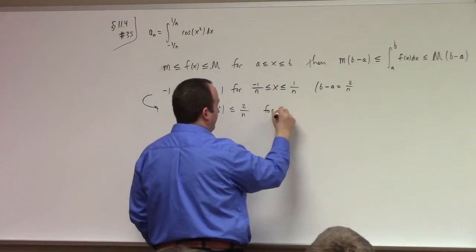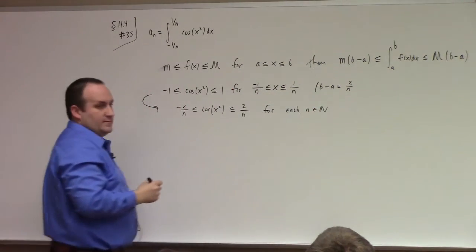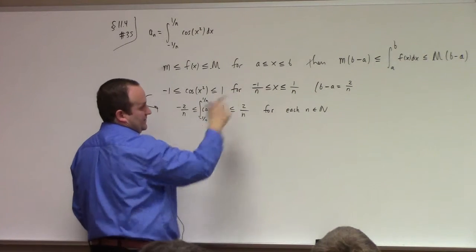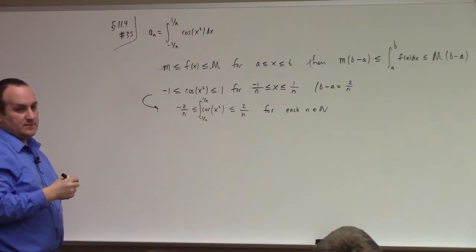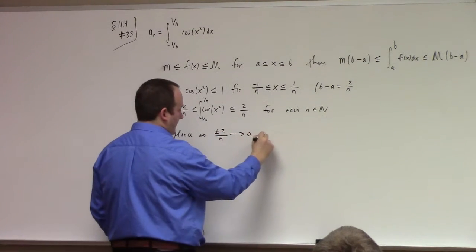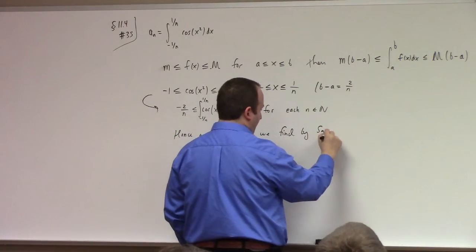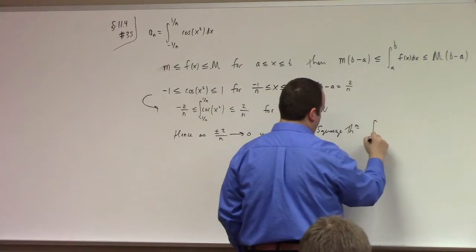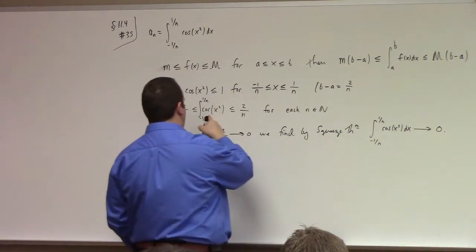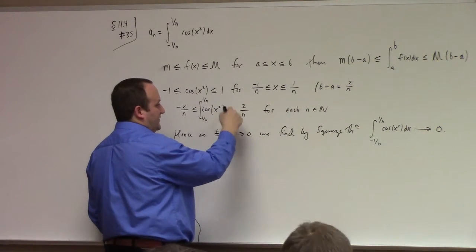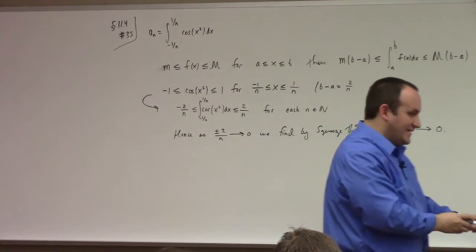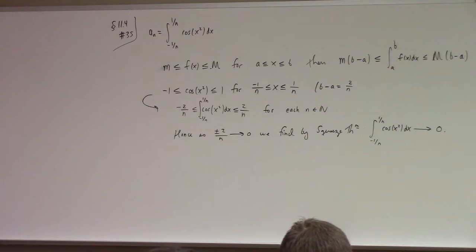That property of definite integrals is definitely the one to go with here. See, because if I look at... What do I got? I've got minus 1 less than or equal to cosine of x squared less than or equal to 1. And that's definitely true for any closed interval, but certainly this one. So this, then, from that property of definite integrals gives me minus 1 over... What's b minus a? 2 over n, right?